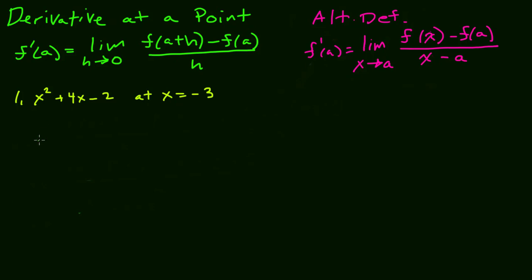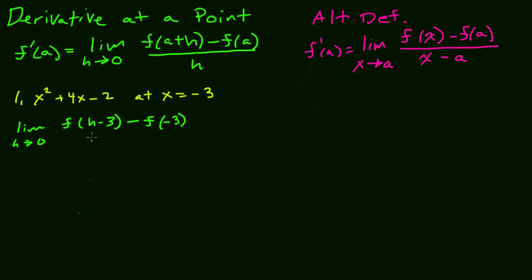For our first example, we have x squared plus 4x minus 2, and we want to find the derivative when x equals negative 3. That's the same as saying a equals negative 3. Using the first method, we take the limit as h goes to 0 of f of a plus h — here a is negative 3, so we write h minus 3 — minus f of negative 3, all over h.